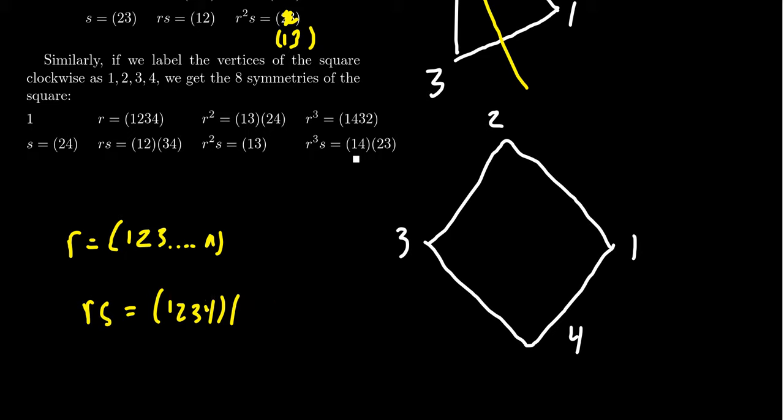So with symmetries of the square, you'll notice that the horizontal reflection and the vertical reflection, these ones are perpendicular to each other. That corresponds to S and R squared S. And then the diagonal ones, these reflections right here, that will coincide with RS and R cubed S. That discusses the symmetry groups for these regular n-gons, which is the dihedral group.